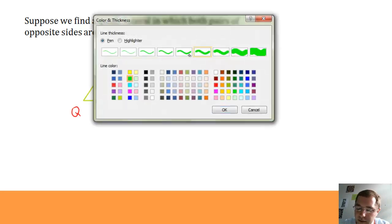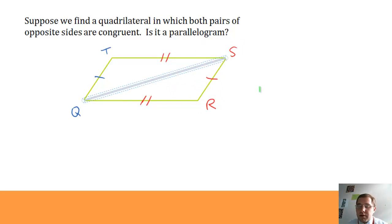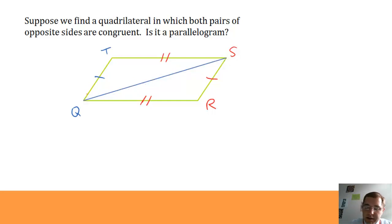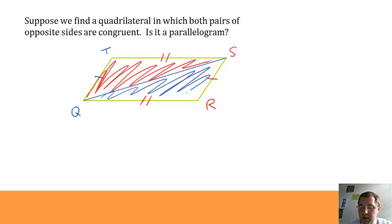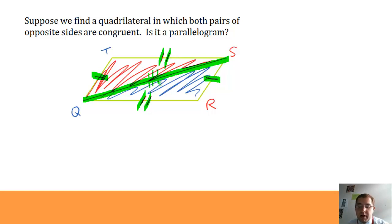Well, let's think about this. What if I draw in a diagonal? I look at these two triangles that I've just formed by drawing this diagonal. I've got this triangle up here, the one I just traced in red, and I've got this triangle down here traced in blue. Those two triangles have two pairs of sides congruent, and they share a side. So by Side-Side-Side, those two triangles are congruent.